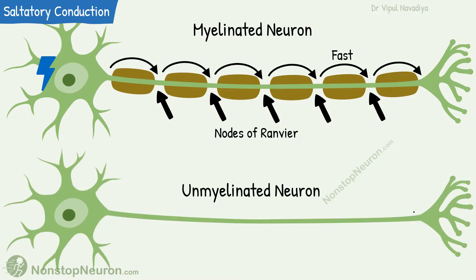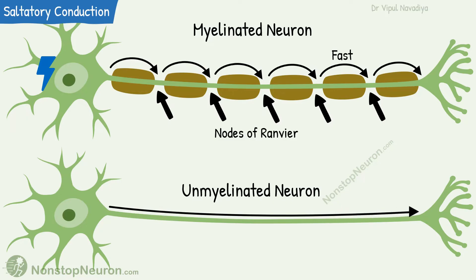On the other hand, unmyelinated neurons do not have this system. In them, the action potential travels continuously through the axon. This is very slow as compared to saltatory conduction.